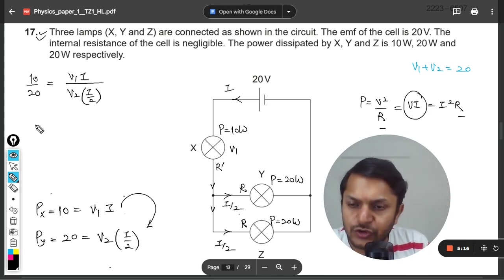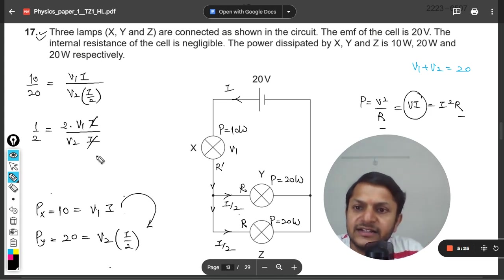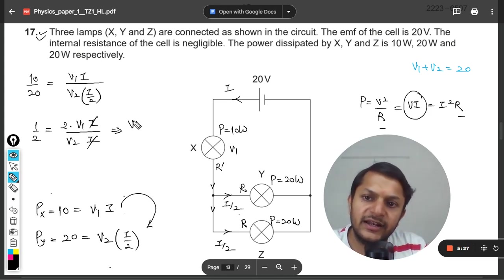So this is 1/2. This 2 will go into the numerator. I and I gets cancelled out clearly. V₁/V₂ is coming out to be 1/4.